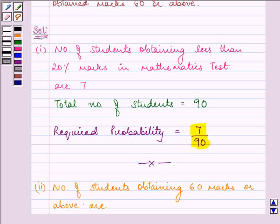Now in the second part, we need to find the probability that a student obtained marks 60 or above.